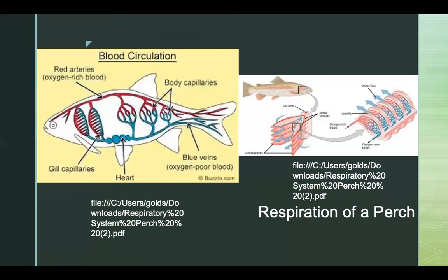Some fish must stay in perpetual motion to keep water flowing over their gills, but the perch and many other fish are able to swallow water through the mouth, which passes over the gills and achieves the same result. This allows them to not have to move constantly. The gills are where water is pumped through, providing vital oxygen from the water to the fish.